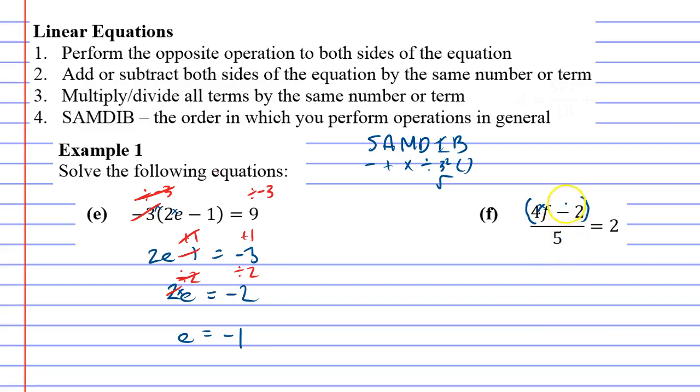We know to do brackets last, so we're going to focus on the divide five. We go times five, which will cancel the five. We need to do it to the two as well, leaving us with four f minus two, no brackets needed now, equals 10.